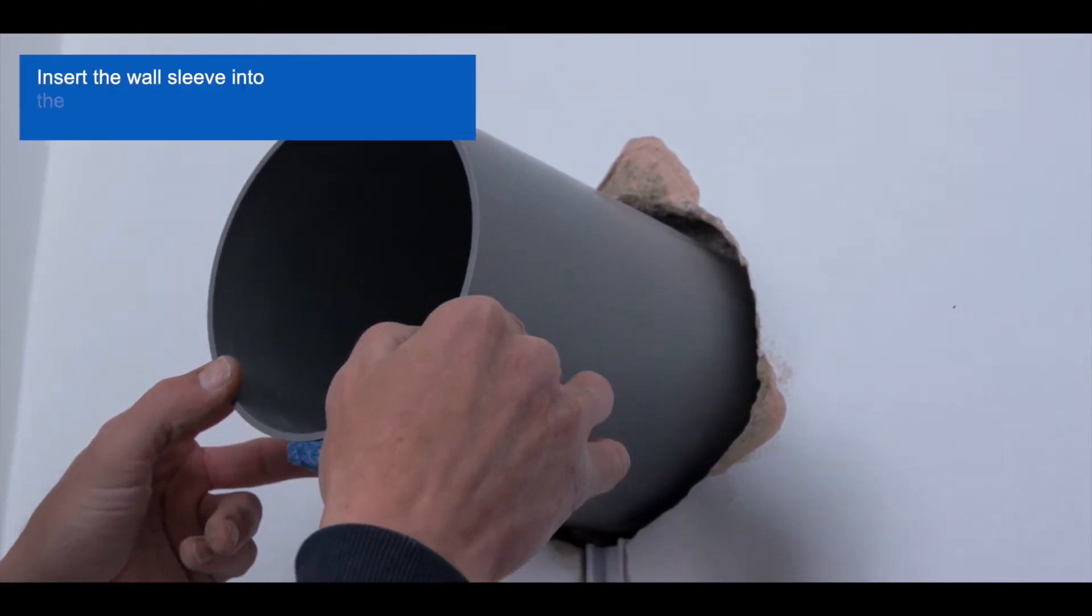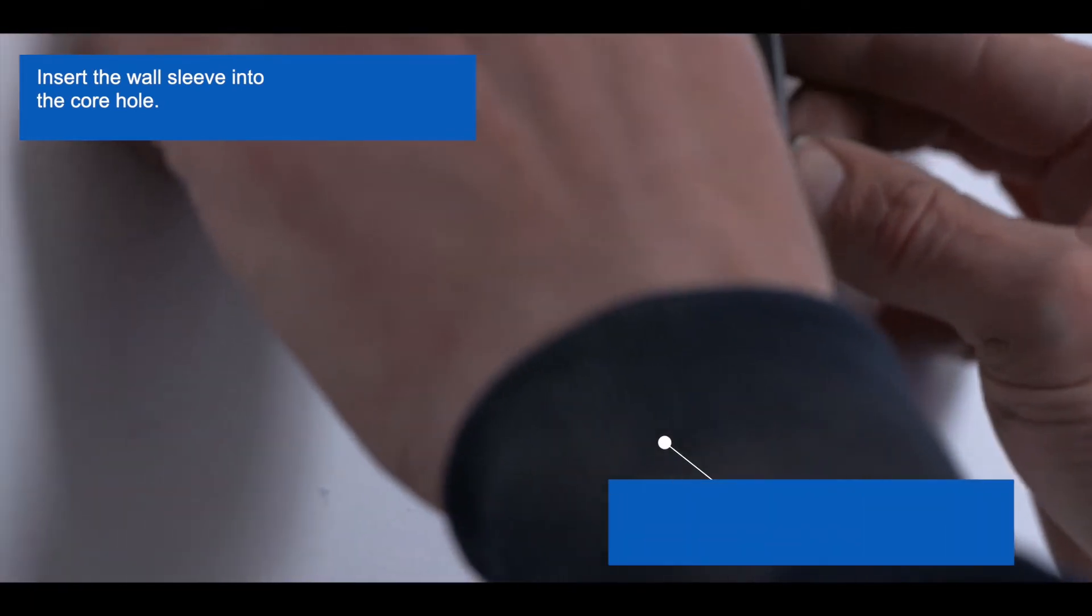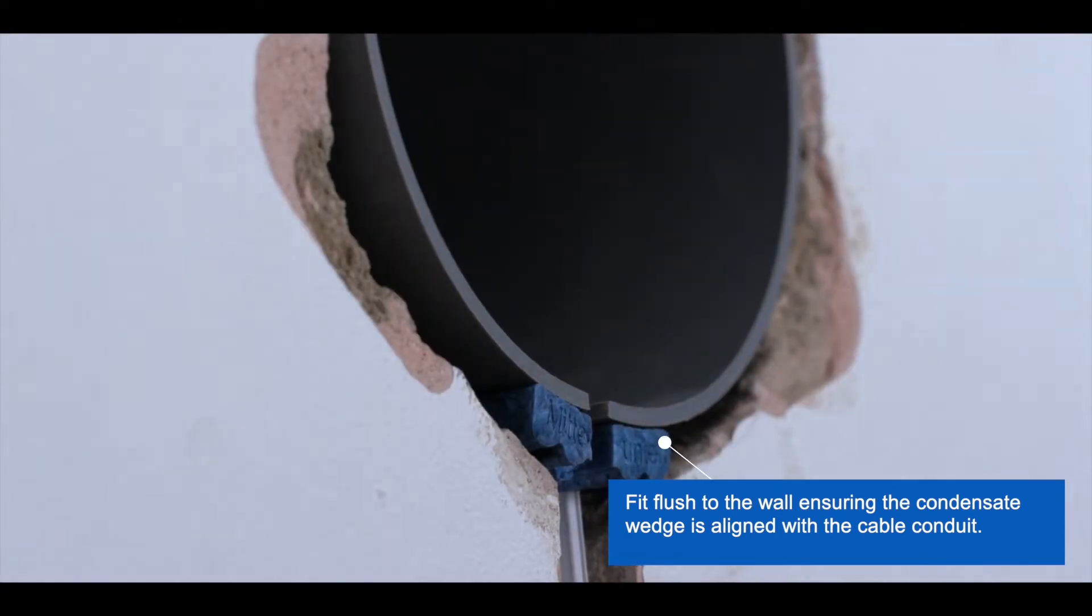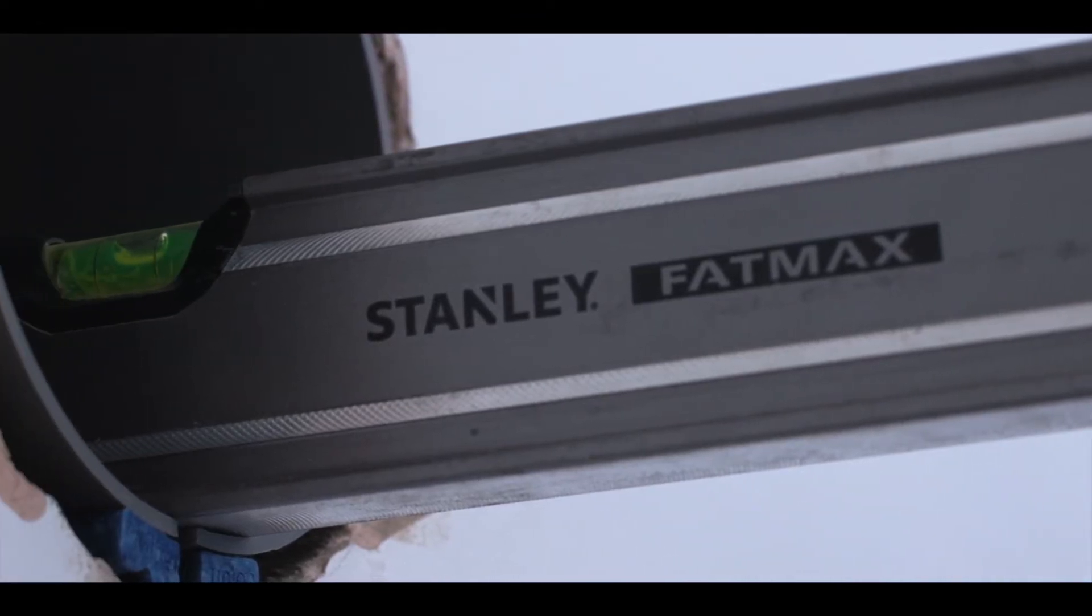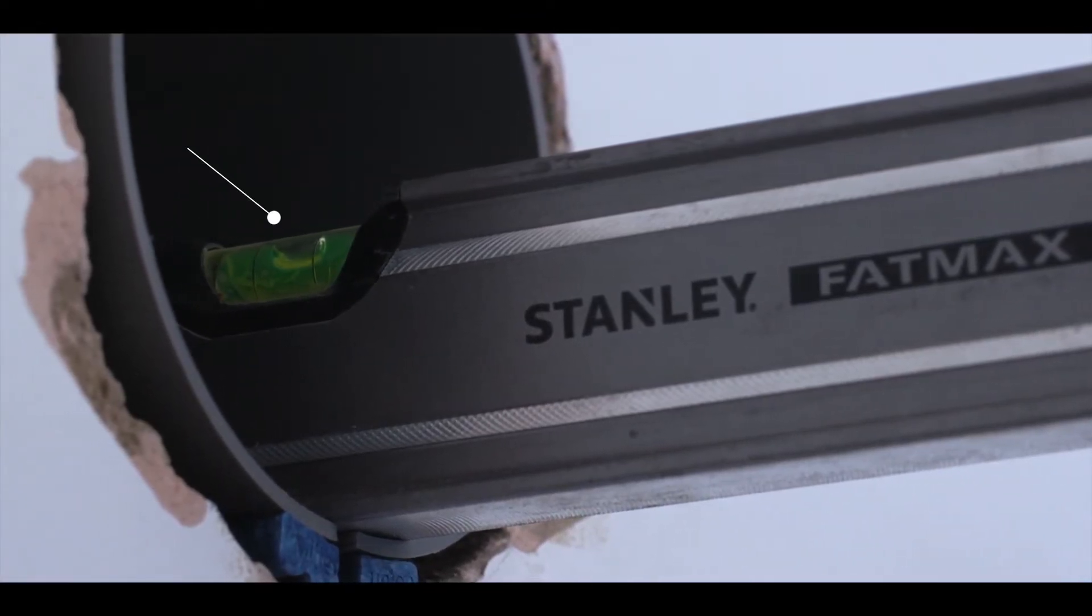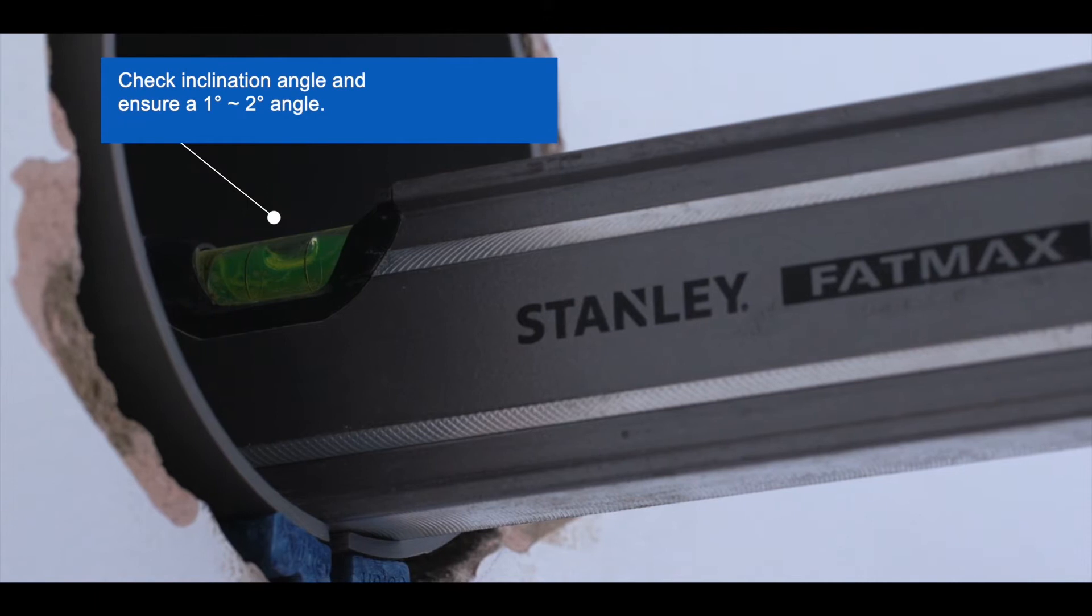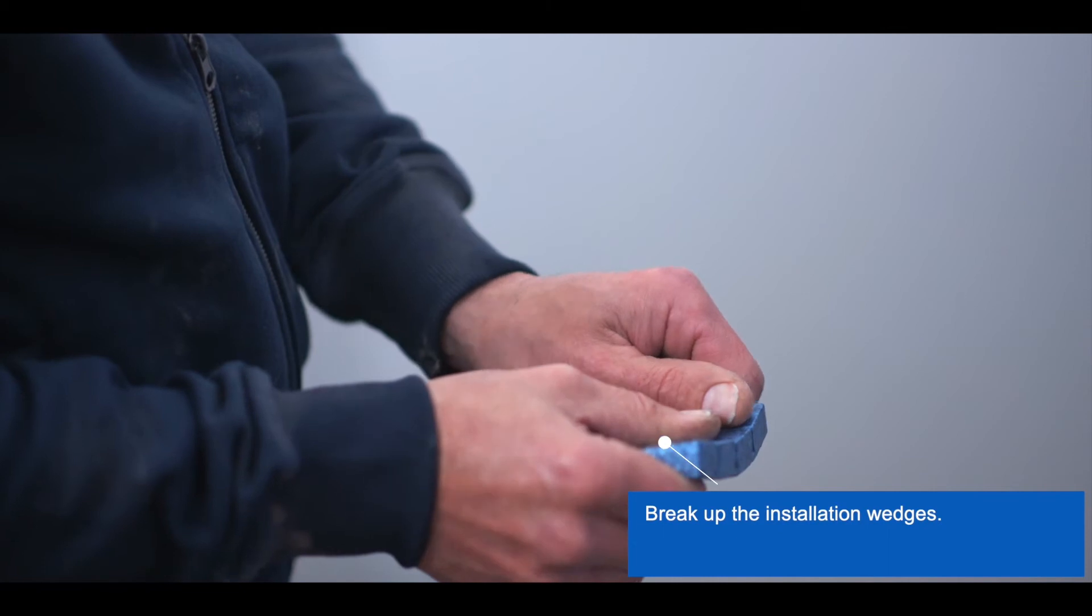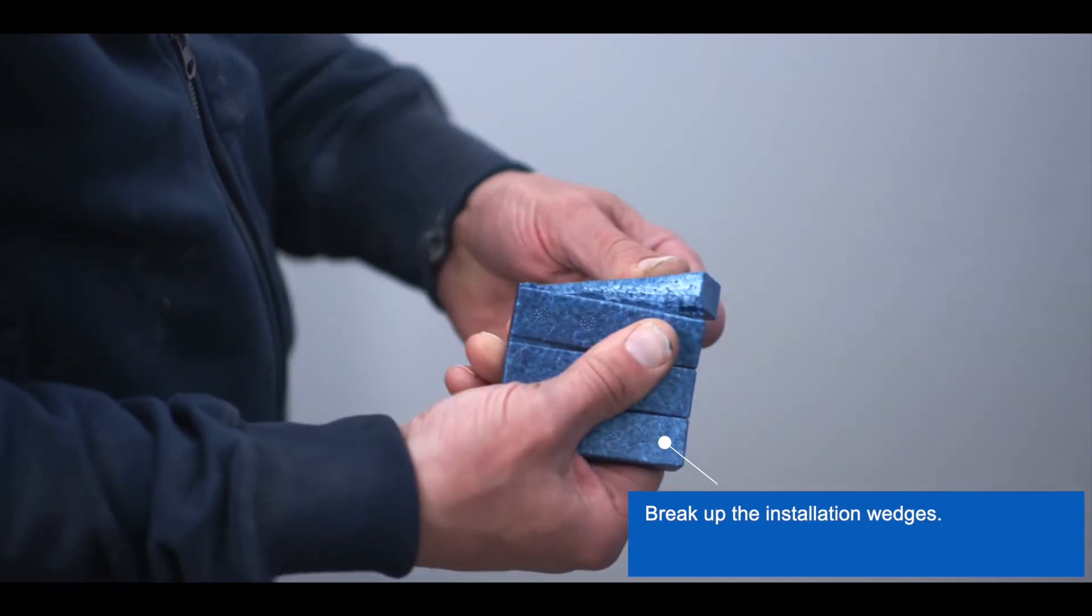Carefully insert the wall sleeve into the core hole. Fit flush to the wall and make sure the condensate wedge is centrally aligned with the cable conduit at the bottom. Check the inclination angle with a spirit level to ensure a one to two degree inclination angle.